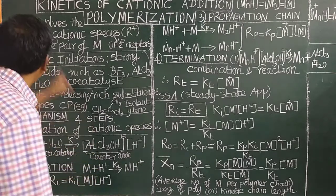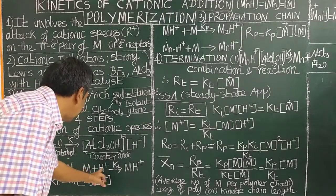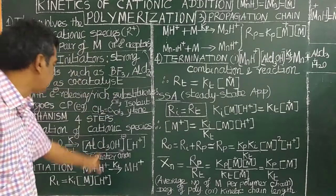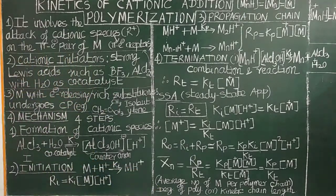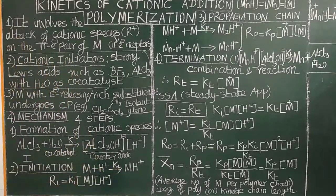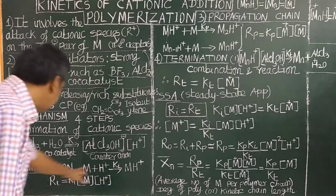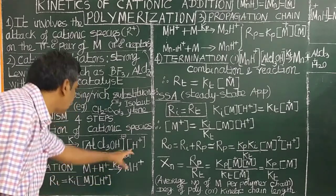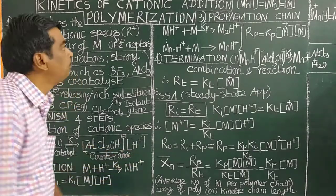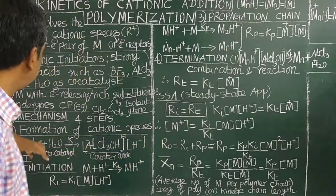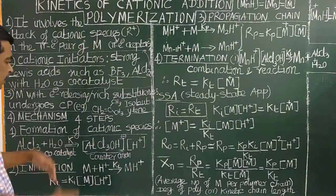In the initiation step, it involves the attack of the cationic species H+ on the electron-rich monomer to give M1H+. The rate of the initiation reaction is: Ri = ki × [M] × [H+]. This H+ concentration is obtained from the equilibrium constant described earlier.